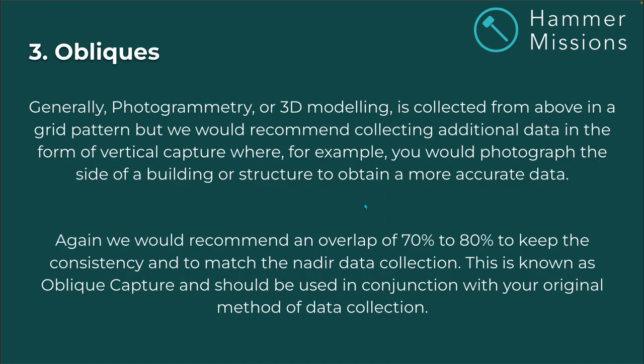Generally, photogrammetry or 3D modeling is collected from above in a grid pattern, but we'd recommend collecting additional data in the form of vertical capture — for example, photographing the side of a building or structure to obtain more accurate data. We'd recommend an overlap of 70 to 80 percent to keep consistency and to match the nadir top-down data collection. This is known as oblique capture and should be used in conjunction with your original method of data collection.